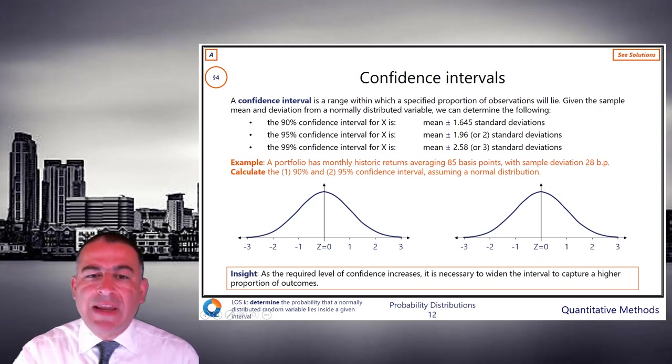But BP means basis points. So we have this random variable. It's averaging 85, sample deviation 28. Calculate 90 and 95 confidence intervals, assuming a normal distribution.